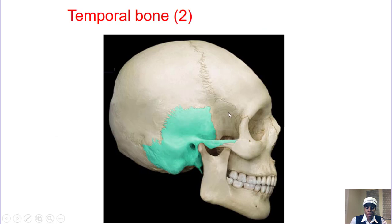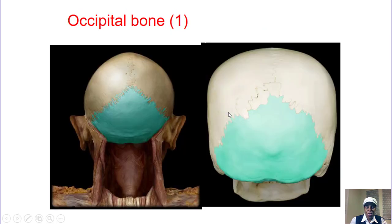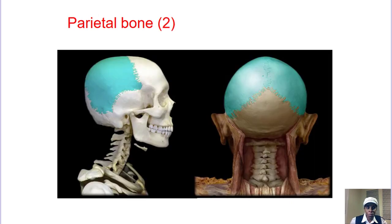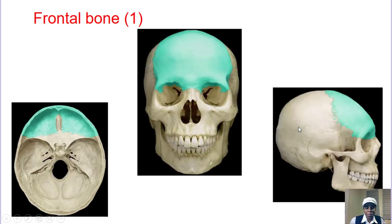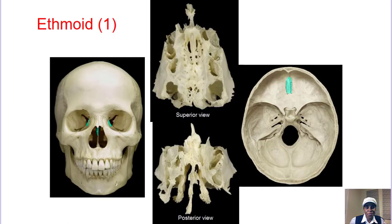The temporal is the temple. The occipital — think about when you have an accident, the back of your head: occipital. The parietal is the lateral part of your head. The frontal is the forehead. The ethmoid looks like an E posteriorly; you can see a little part of it protruding on the cranium, and it forms part of the septum and the eye socket.